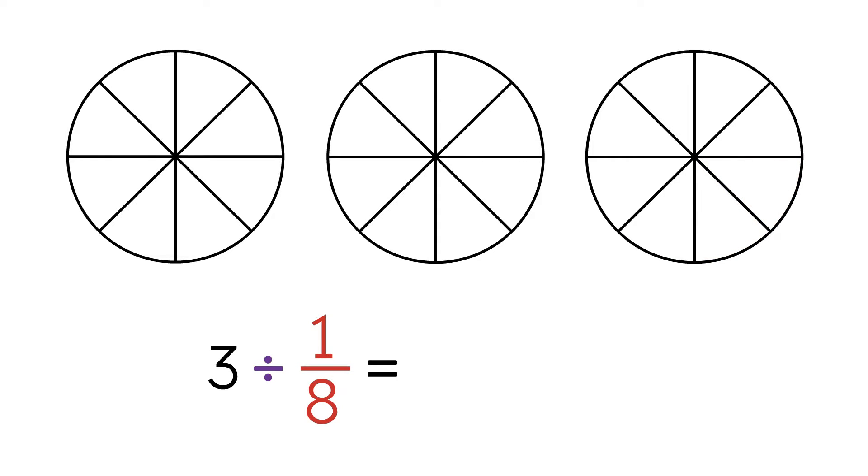To find the total number of slices, we need to add them all up: 8 plus 8 plus 8. This is the same as multiplying 3 times 8, which is equal to 24. So to find the total number of slices in the 3 pizzas, we need to multiply the number of eighths in each pizza by the number of pizzas. As you can see, instead of 3 divided by 1 eighth, we have 3 times 8, which equals 24.